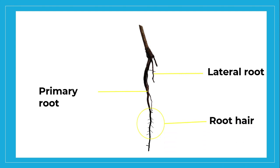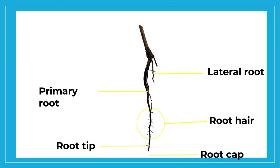We have what we call the root hairs, which collect water and mineral nutrients. The root tip is the apex part where the young tissue is located. And lastly, the root cap protects the growing tip in plants and enables downward growth of the root.